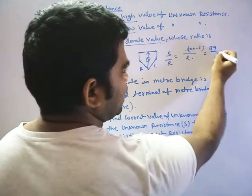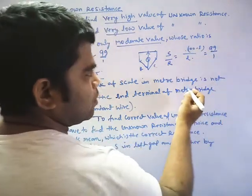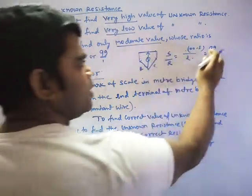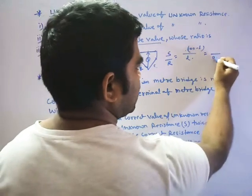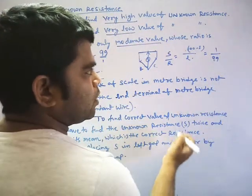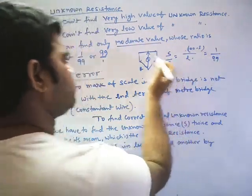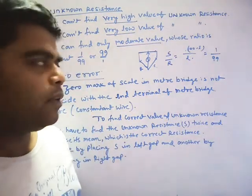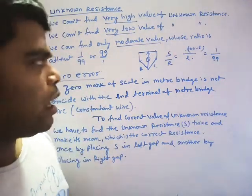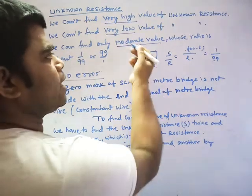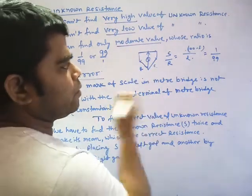Suppose null point is exactly on the 99, so you will write 99 and what is left? 1. Or if it is showing on the other side, then you have to write here 99 and there 1. So if it is there, then only it will show the correct answer. Otherwise, not. Now, how is it moderate?